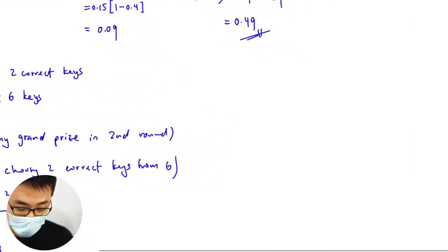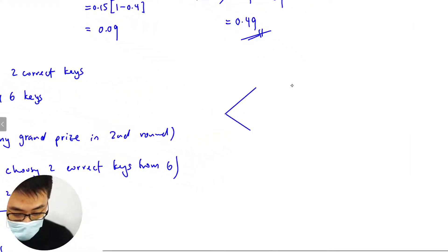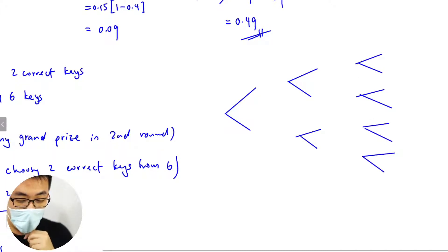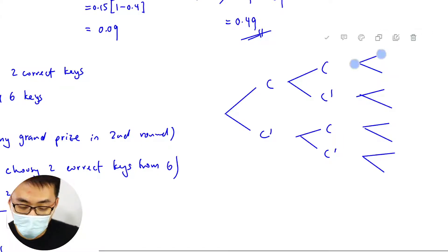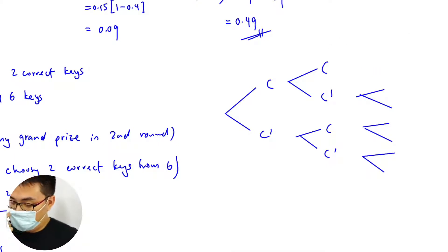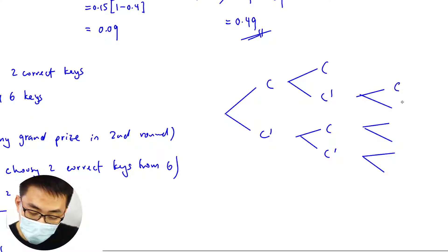Make sure the tree diagram is the same as mine, so three rounds only. Here you only have two events: correct key and not correct key, so it's very easy to see. Be correct, not correct, correct, not correct, correct, not correct. If you have two correct then you can just don't continue the tree diagram because you already got it correct. So the tree diagram will look something like that.